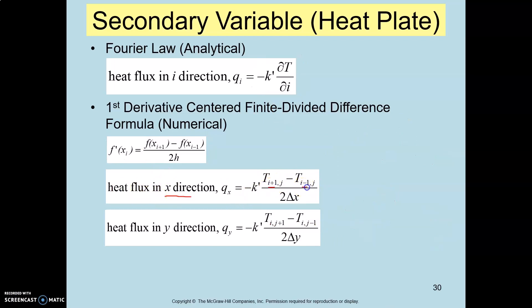For the heat flux in X direction it should be i plus 1, i minus 1. For the heat flux in j direction, the i should remain constant. The j will change to j plus 1 and j minus 1, so you need to correct this equation. The step size in Y direction is Delta Y.